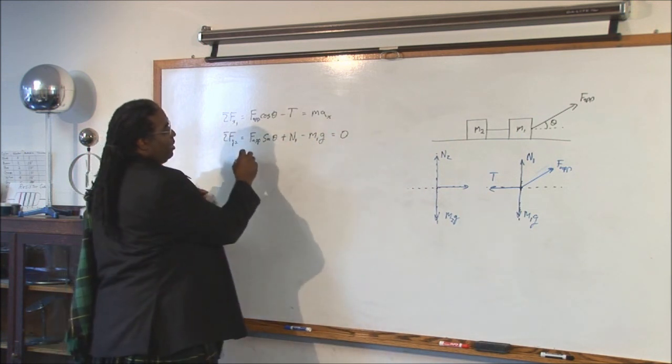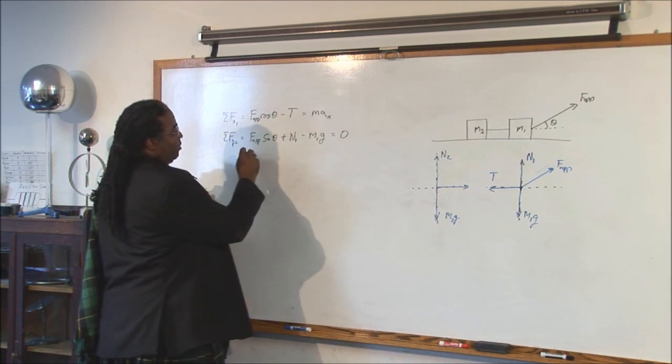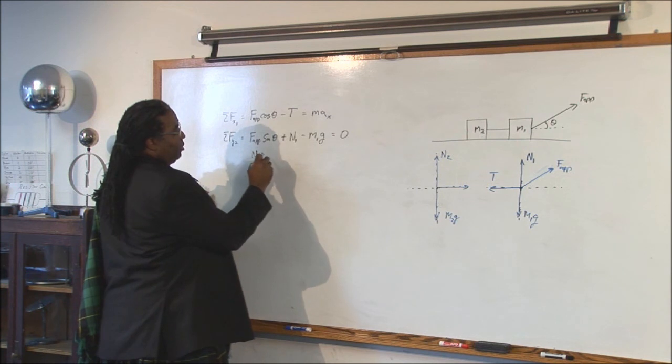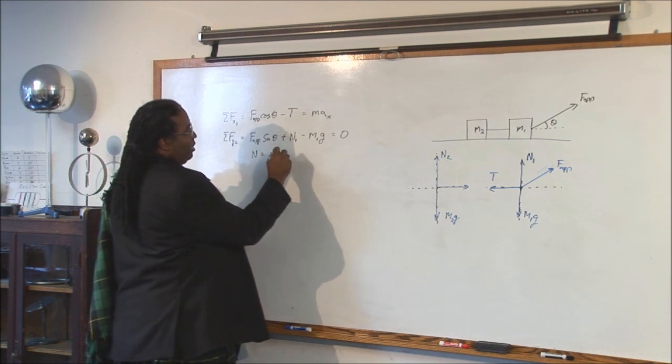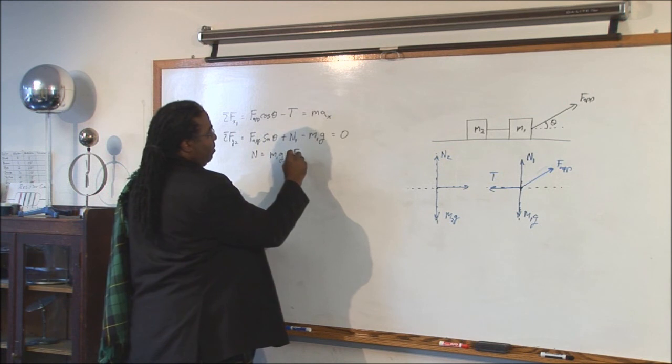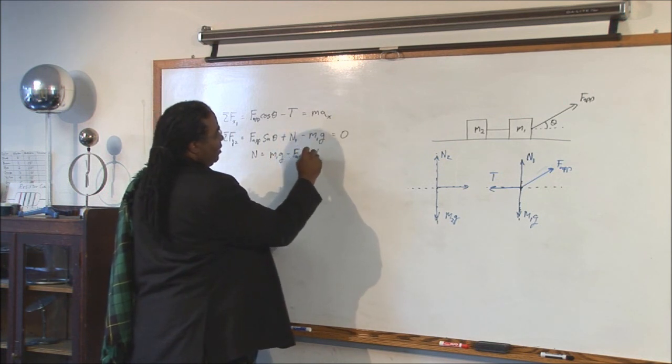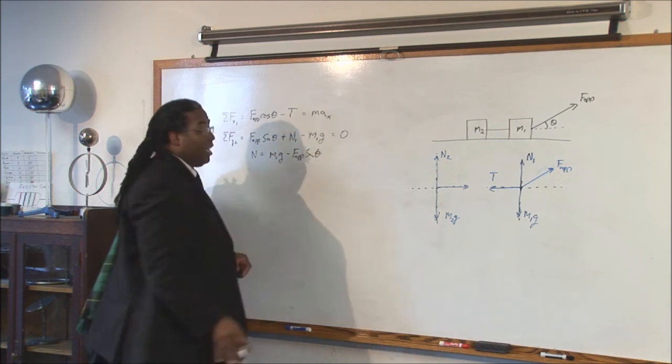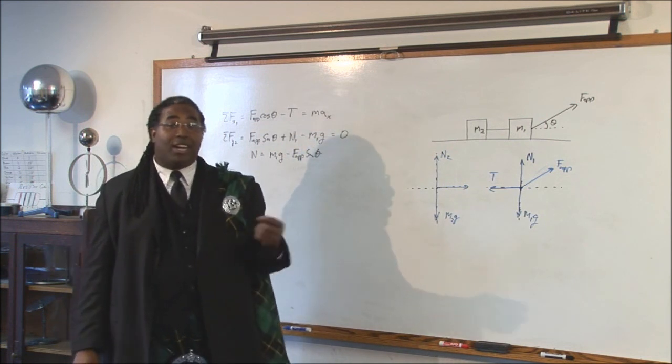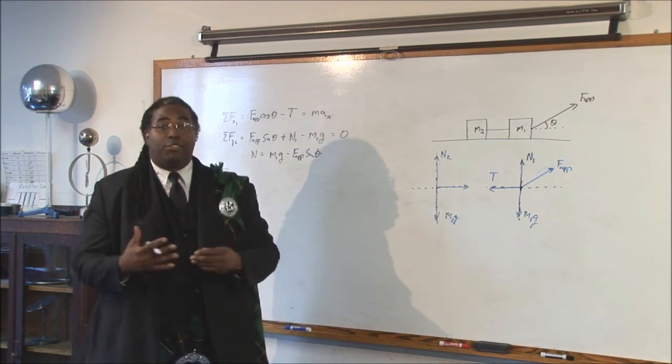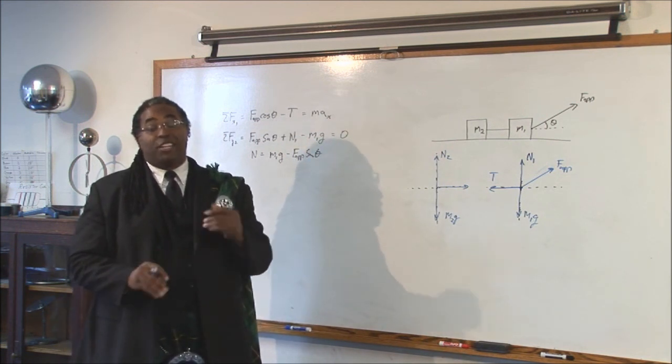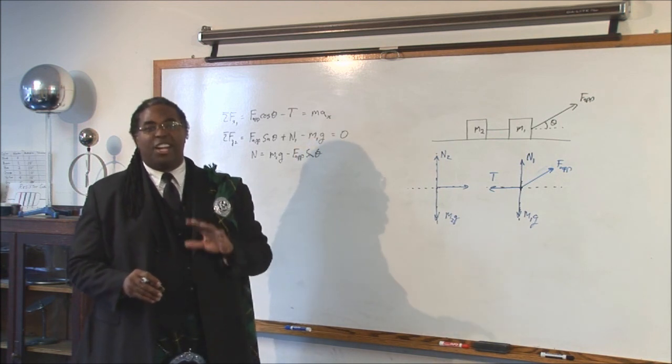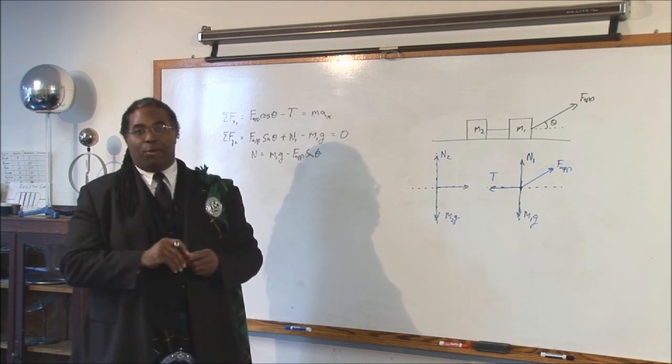So we know, again, the normal force is equal to M one g minus F applied sine theta. Since there's no friction, we're not going to use it, but let's just keep doing it so that we have good form because when we get to the part where we have friction, you'll already be in the habit of working with the y component.